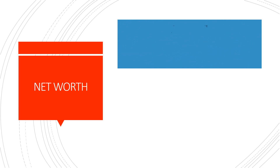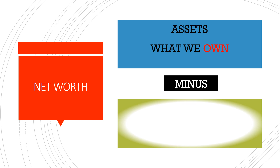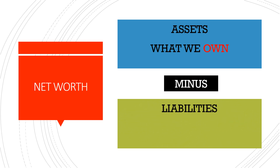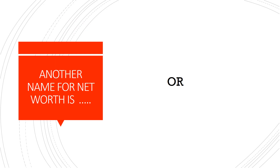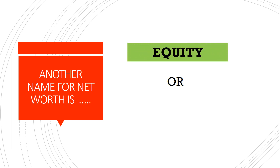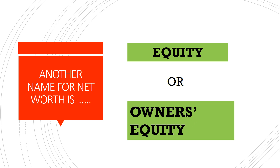How do we calculate how rich you are? How do we calculate your net worth? You take your assets — everything that you own — minus your liabilities, everything that you owe, all the money that you owe to others. So to calculate net worth we say assets minus liabilities. Another name for net worth is what we call equity, so assets minus liabilities is equal to equity.